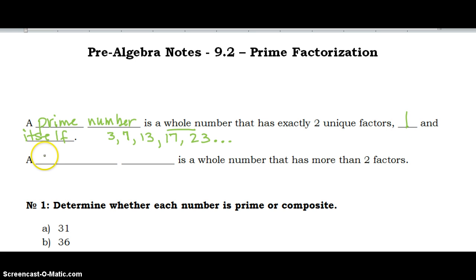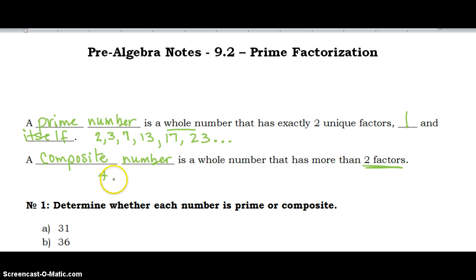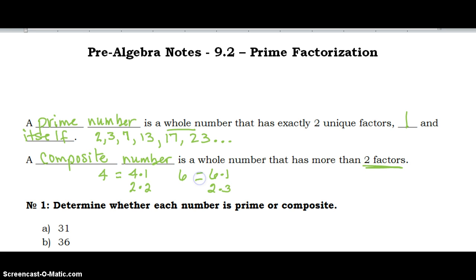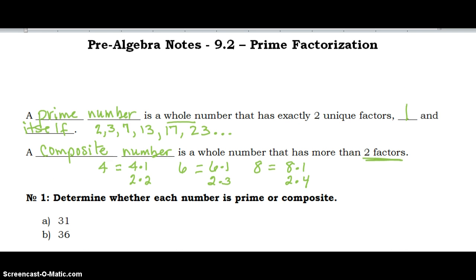A composite number is a whole number that has more than the two factors of itself and one. By the way, 2 is prime. A composite number would be 4, because 4 times 1 is 4 and also 2 times 2 — it has more than just the two factors. Five would be prime. Six would not be prime; it's composite because not only is 6 times 1 equal to 6, but so is 2 times 3. Eight is composite because we can say 8 times 1 or 2 times 4. Most numbers are composite, but there are a few that are prime.